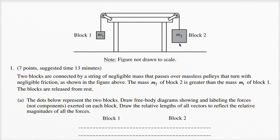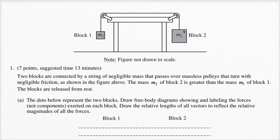Let's think about what we think is going to happen here. Block two has a larger mass. They're connected by this string and pulley system. If it has a larger mass in the same gravitational field, it's going to have a larger weight. So the weight pulling down on block two is going to be larger than the weight pulling down on block one, and block two will accelerate downwards.